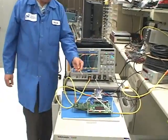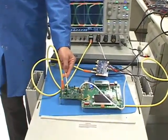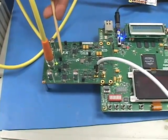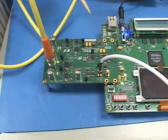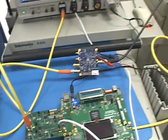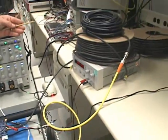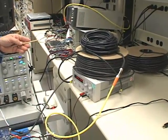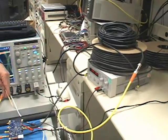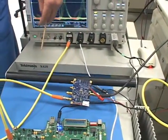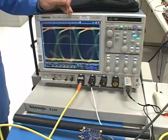The setup that I have here includes an LMH0340 serializer, which I'm using to generate a 3 gigabit per second color bar pattern, which is coming out through the yellow cable, going to 150 meters of cable, which is there to add jitter to the signal, and then the output of the cable is coming to a distribution amplifier, the output of which is being displayed on my oscilloscope screen.